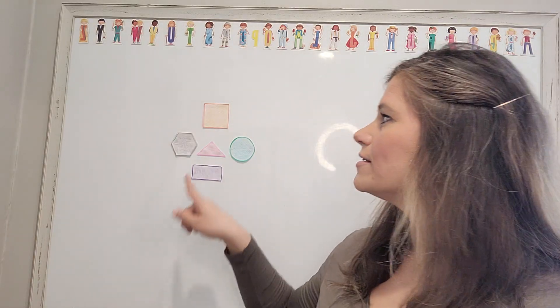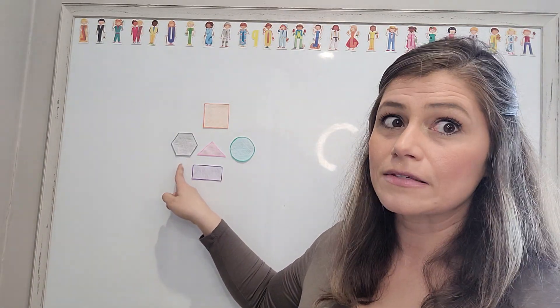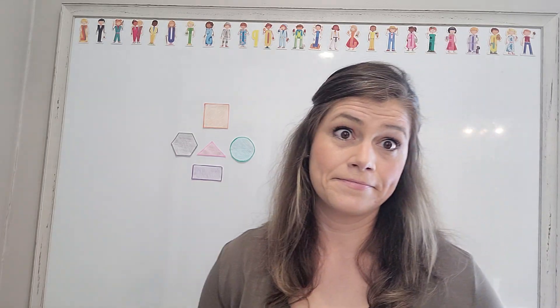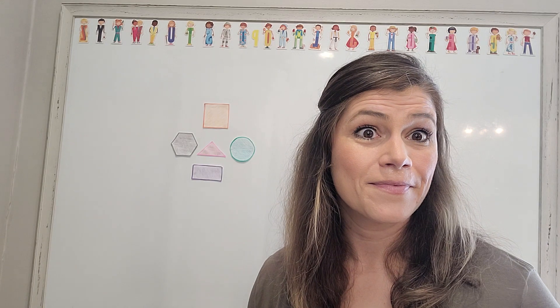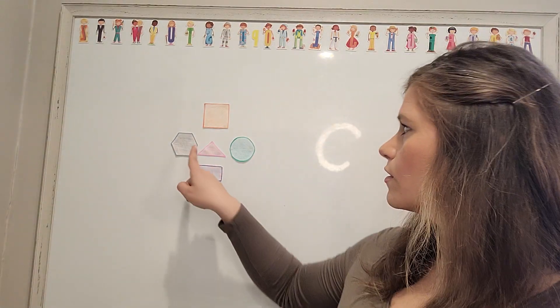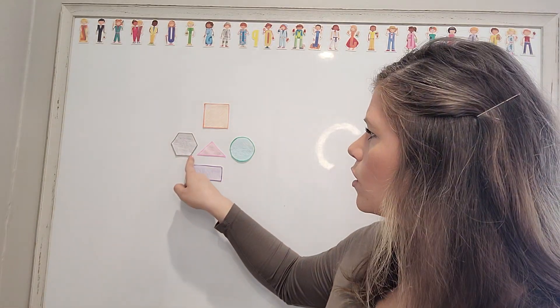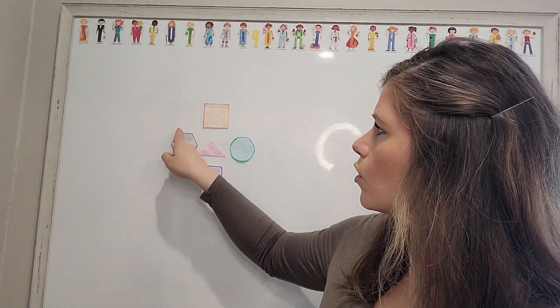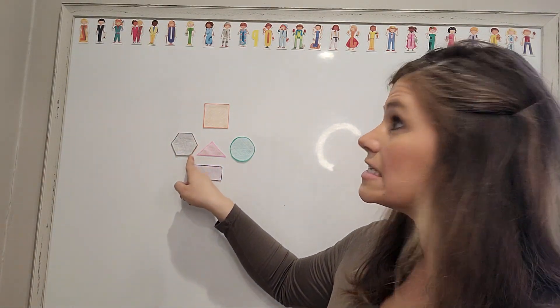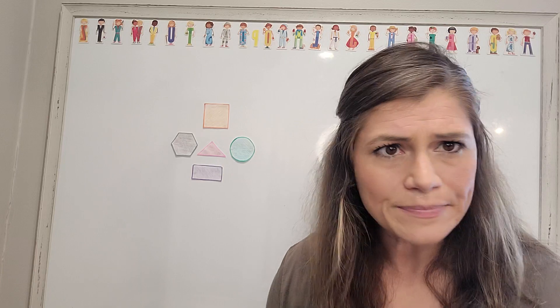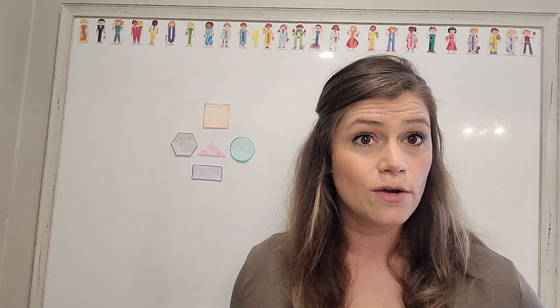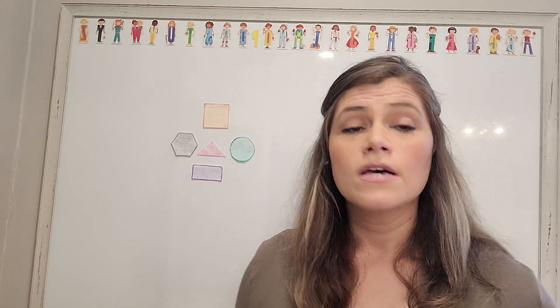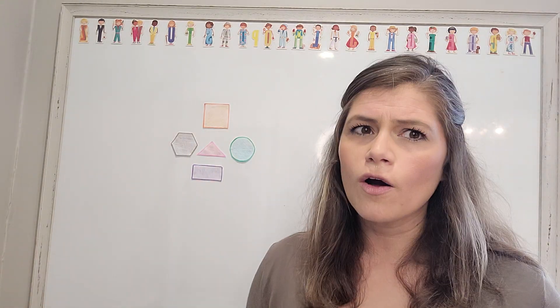Does anybody know what this shape is? It's a little tricky. Let's first look at our attributes in order to name this shape. How many sides does this shape have? One, two, three, four, five, six — it has six sides. And all six sides are equal; they are all the exact same length.